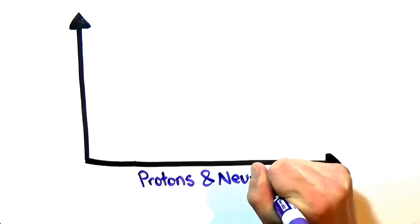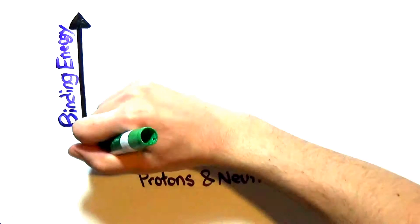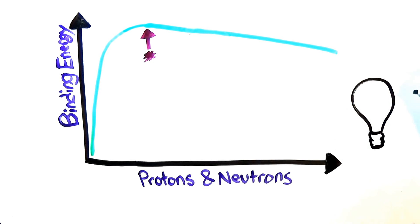It turns out there's a sweet spot with this binding energy. Too many or too few bits make up a core that is not very comfortable for the neutrons and protons. Because there is a shift with more stability towards the sweet spot, the energy which was maintaining the instability ends up being released.